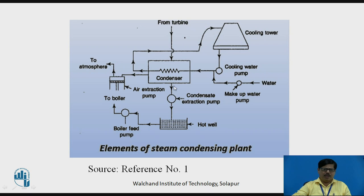The condensate extraction pump is placed between the condenser and hot well. Its function is to take the condensate at low pressure from the condenser, increase its pressure, and deliver it to the hot well. The hot well is a storage reservoir for feed water in the form of condensate. From the hot well, the boiler feed pump takes this condensate as feed water, increases its pressure to the required boiler pressure, and supplies it to the boiler. Another important element is the air extraction pump.